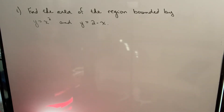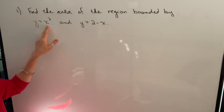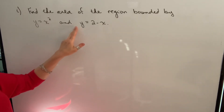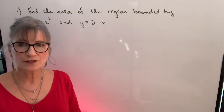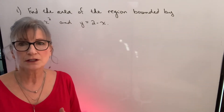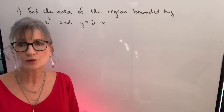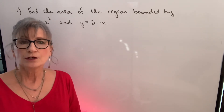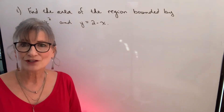Our first example asks us to find the area of the region bounded by the curve y equals x squared and the straight line y equals 2 minus x. Your first step is to draw both curves because you need to know which curve is the top curve and which curve is the bottom curve. We're also going to have to find points of intersection.